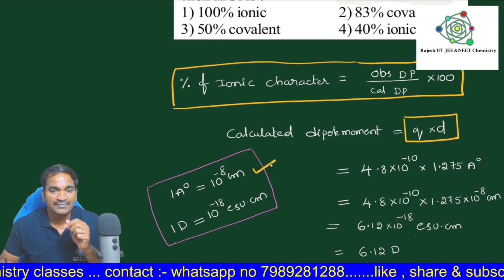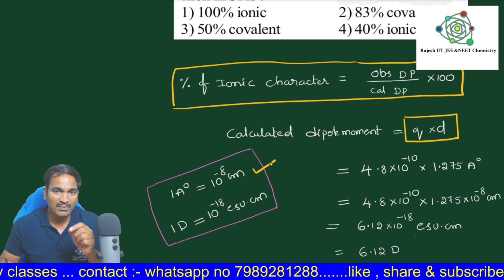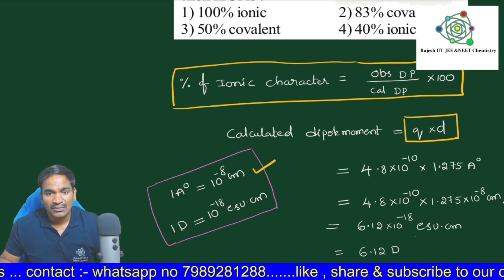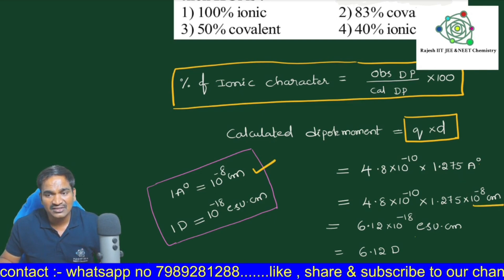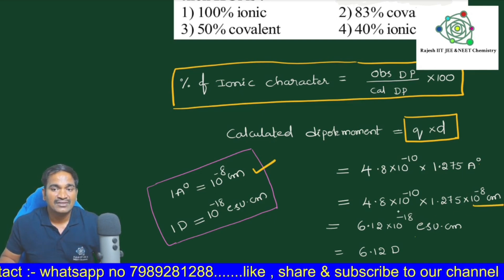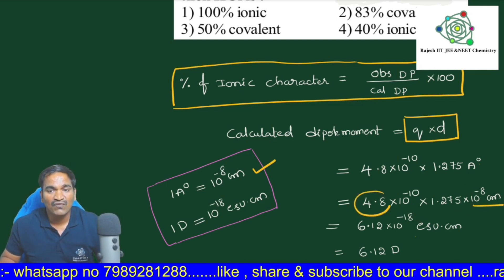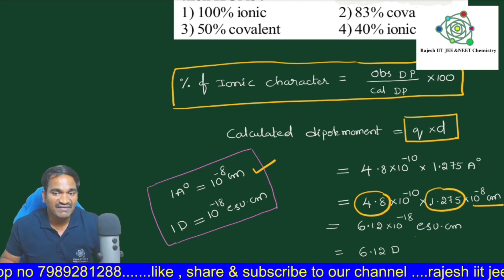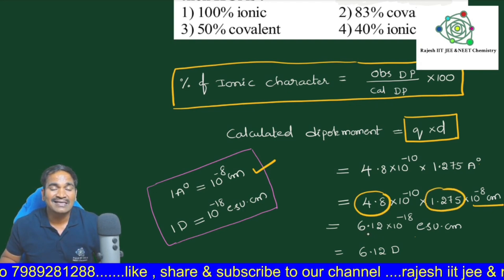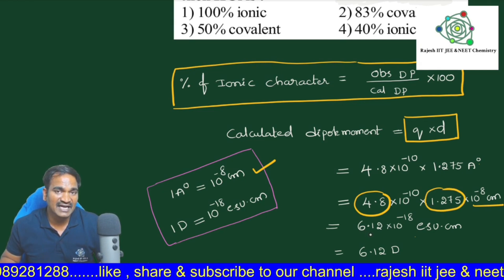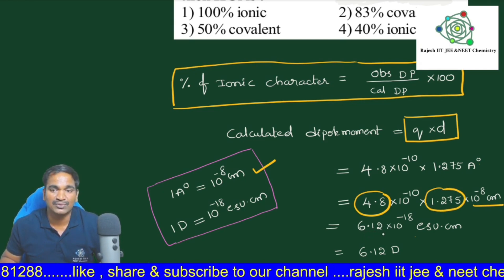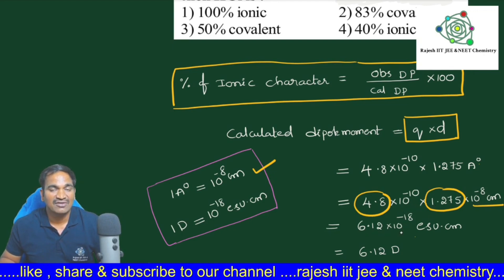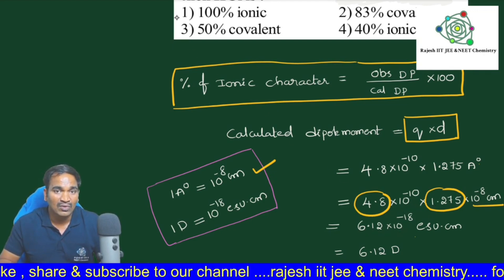Here, angstroms I am converting into centimeter. 1 angstrom equals 10⁻⁸ centimeters. So I have taken minus 8 centimeters here. Now I multiplied 4.8 into 1.275 and got 6.12 × 10⁻¹⁸.